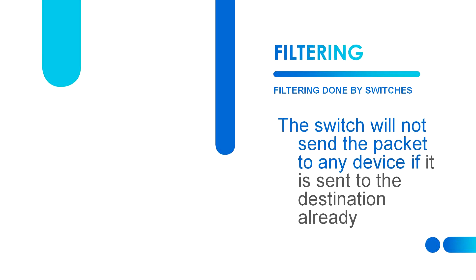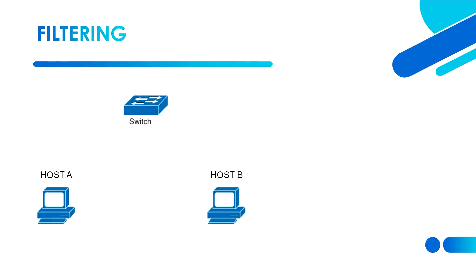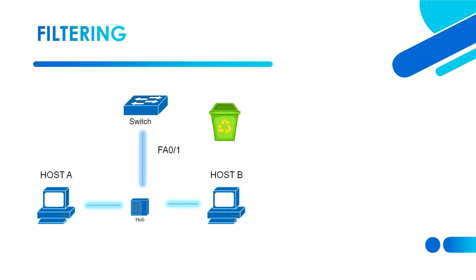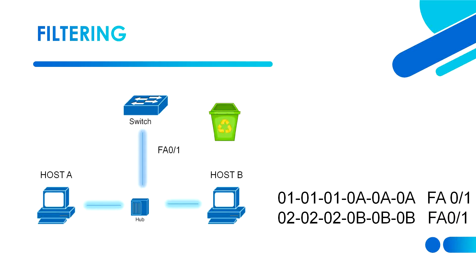Next is filtering. The switch will not send the packet to any device if it is already sent to the destination. In this example network we have Host A, a switch, Host B, and a hub. The port of the switch connected to the hub is FastEthernet 0/1. In the MAC address table, both the MAC addresses of Host A and Host B are from FastEthernet 0/1 of the switch.